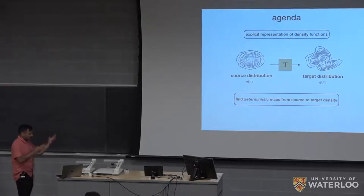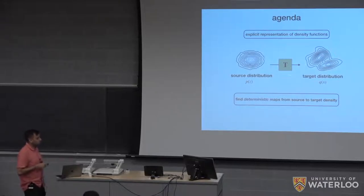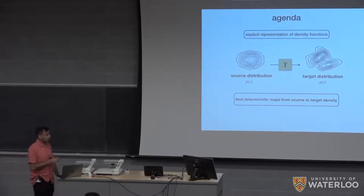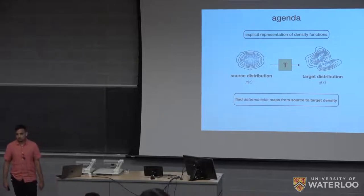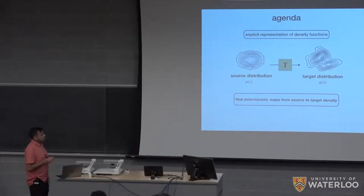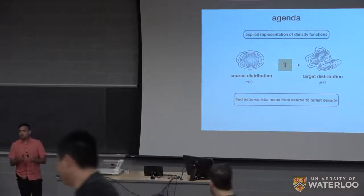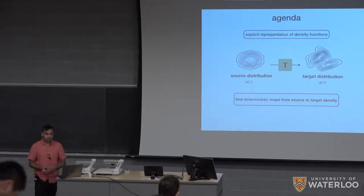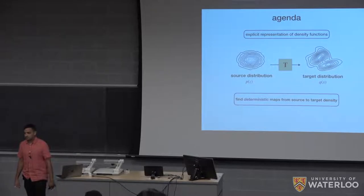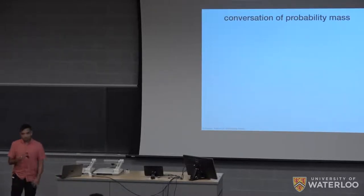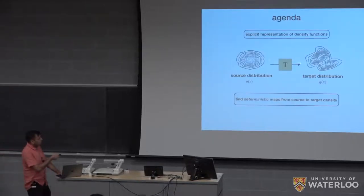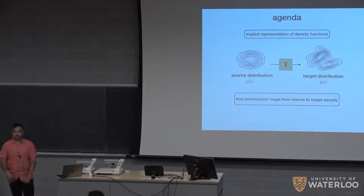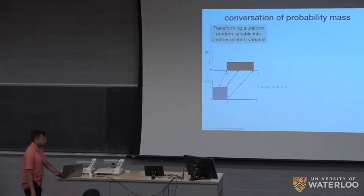The agenda becomes: learn a transformation T that transforms a simple source density pz — like a Gaussian — onto a more complicated target distribution. Normalizing flows need to learn these functions so that we get an explicit representation of the density. The advantage over previous models is that they provide this explicit representation of density functions.